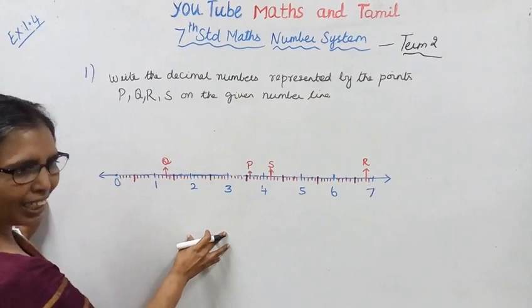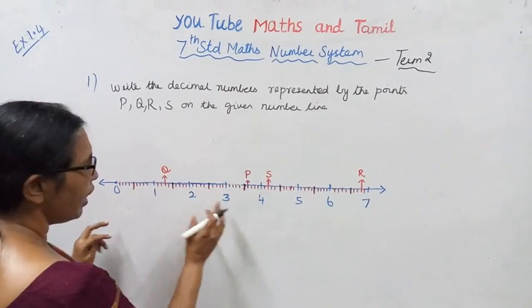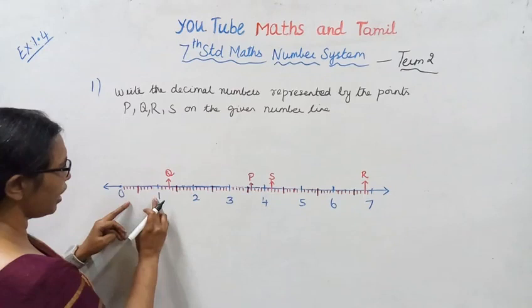Note that these are decimal numbers. We can see the unit length between 1 and 2, 2 and 3, all of them divided into 10 equal parts. 0 to 1 is equal parts, 1 to 2 is equal parts, 2 to 3 is equal parts.